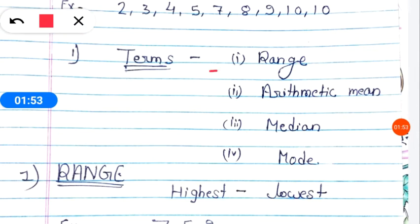So next, in data handling chapter, there are some terms which are very important and questions also come from these. So let's see: range, arithmetic mean, median, and mode. So let's understand them one by one.